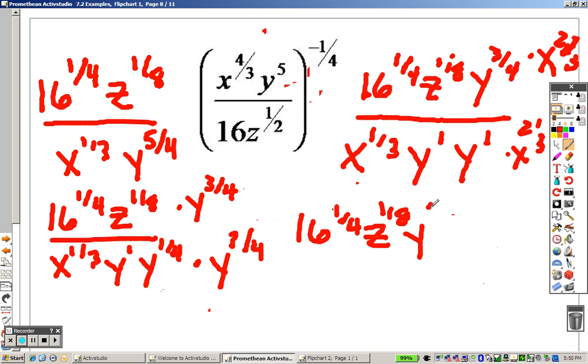Now I'm looking at z to the 1 eighth, y to the 3 fourths, x to the 2 thirds all over x to the 3rd and x to the 2 thirds is x to the 1st and y times y is y squared.